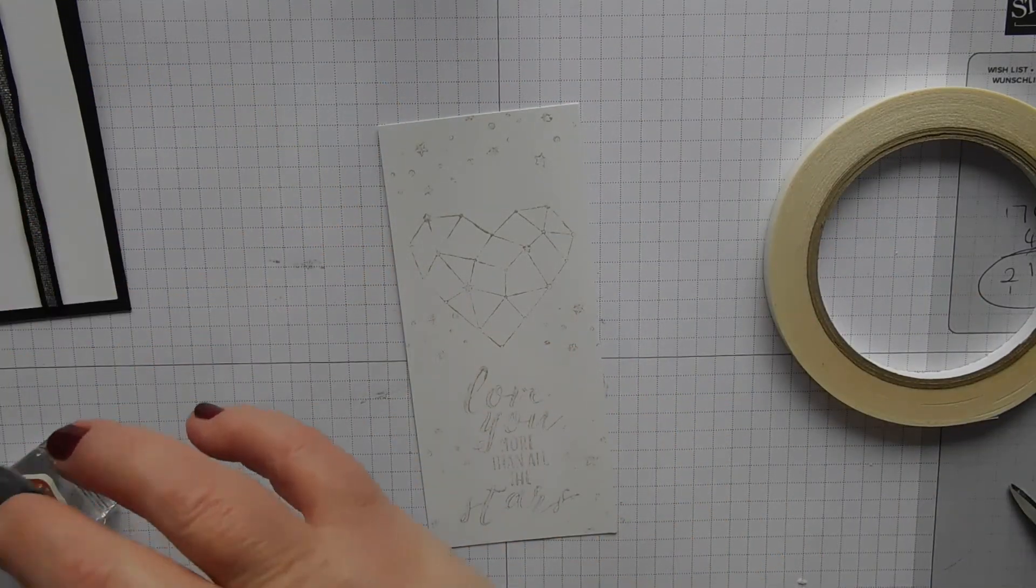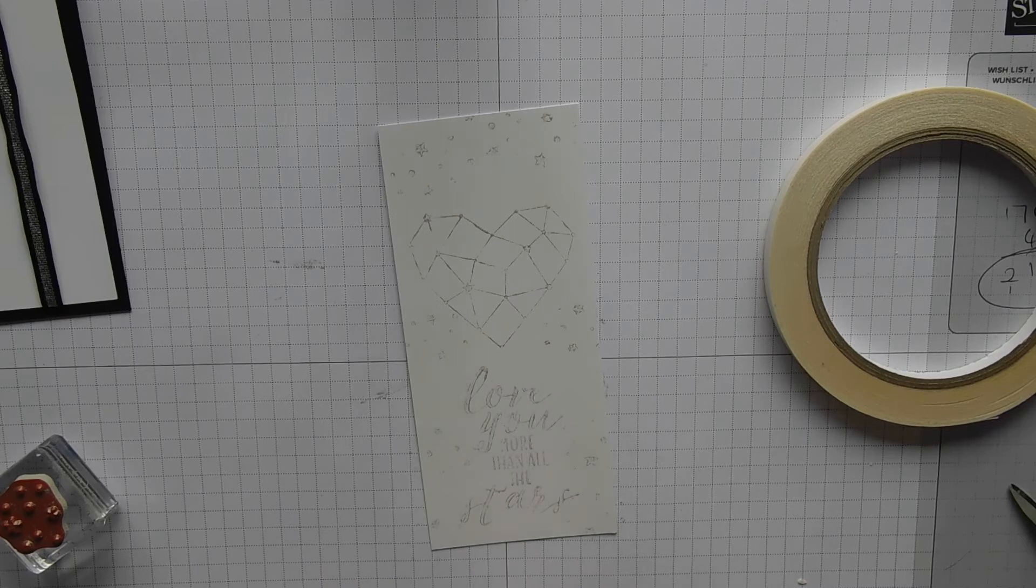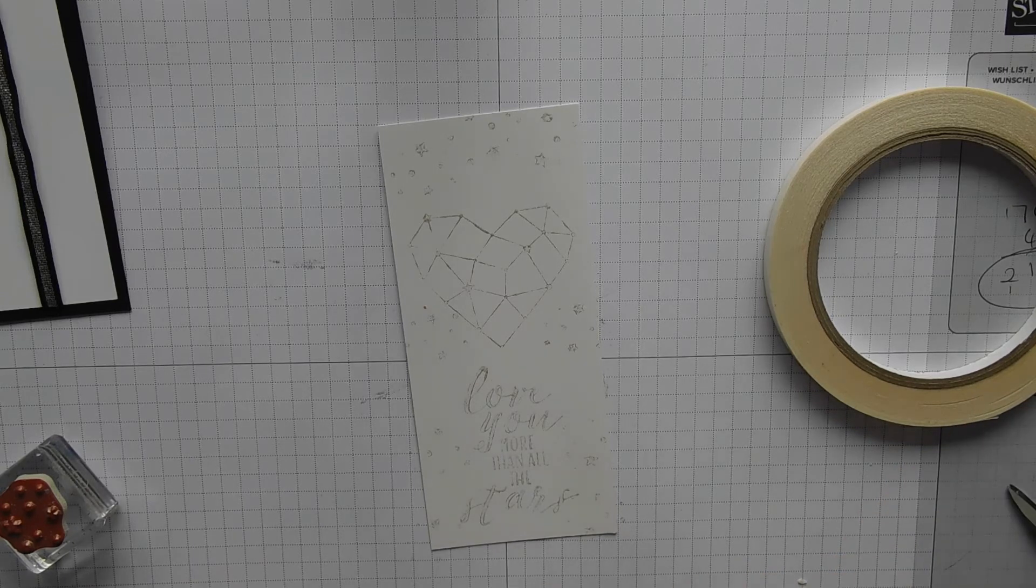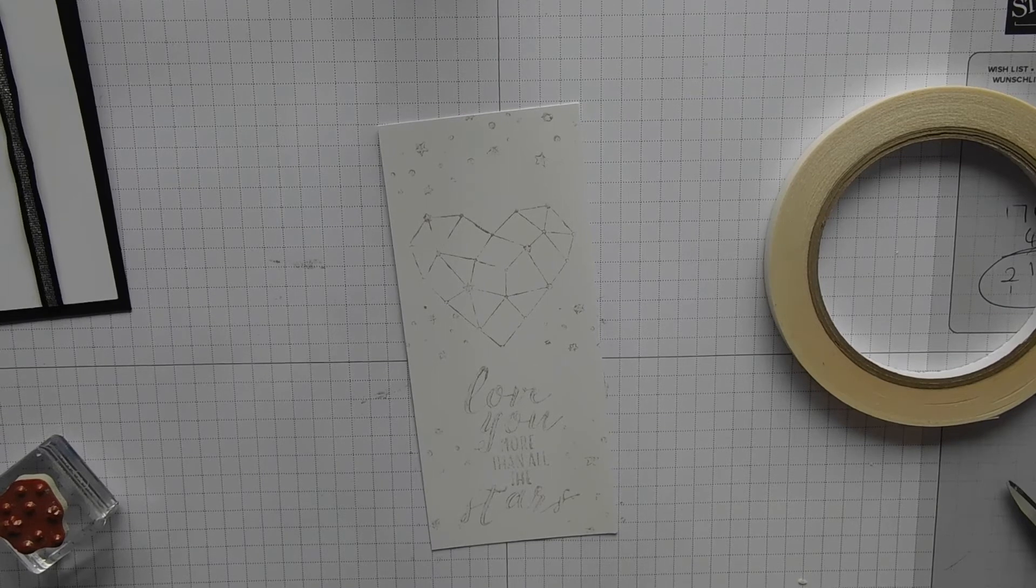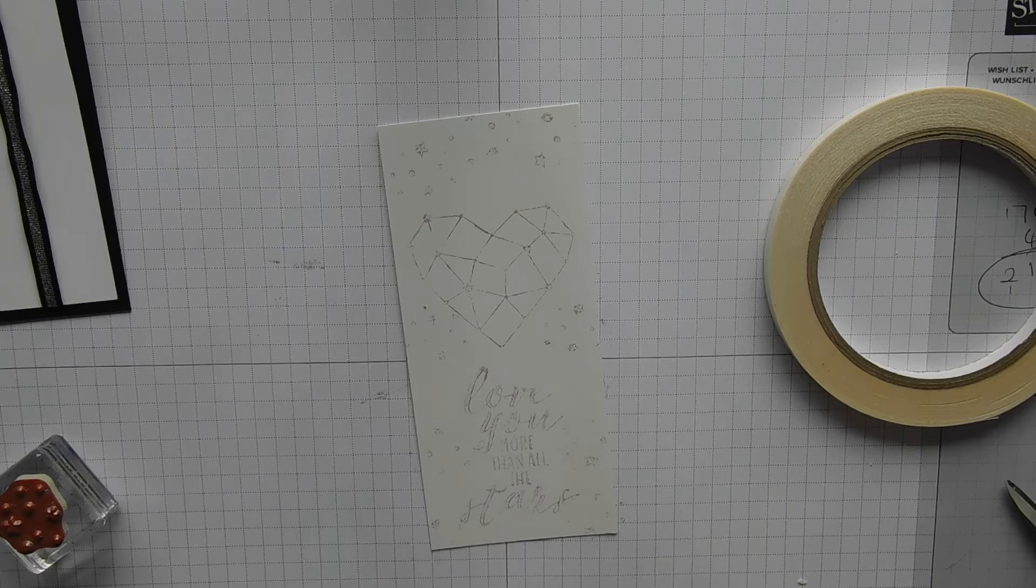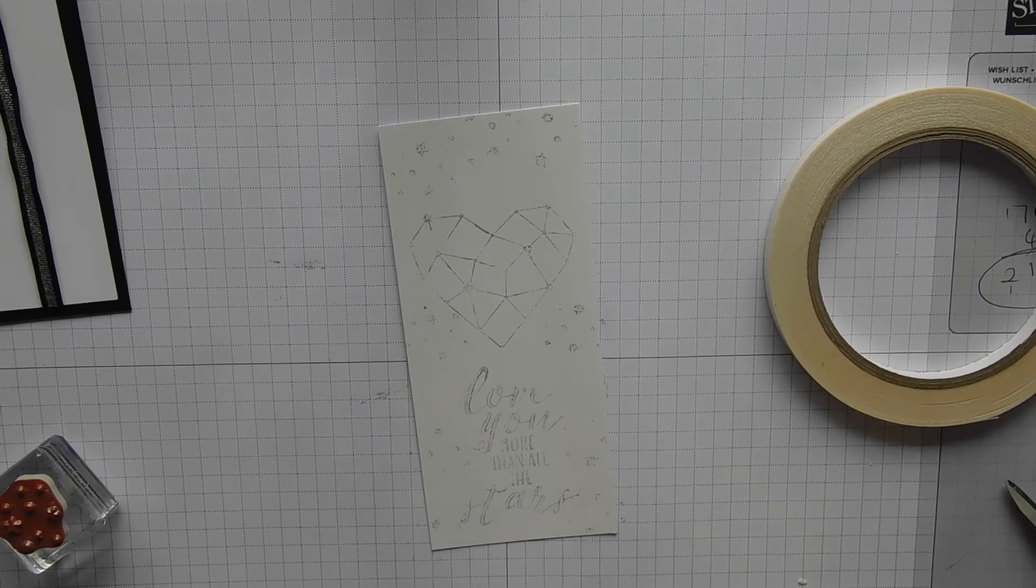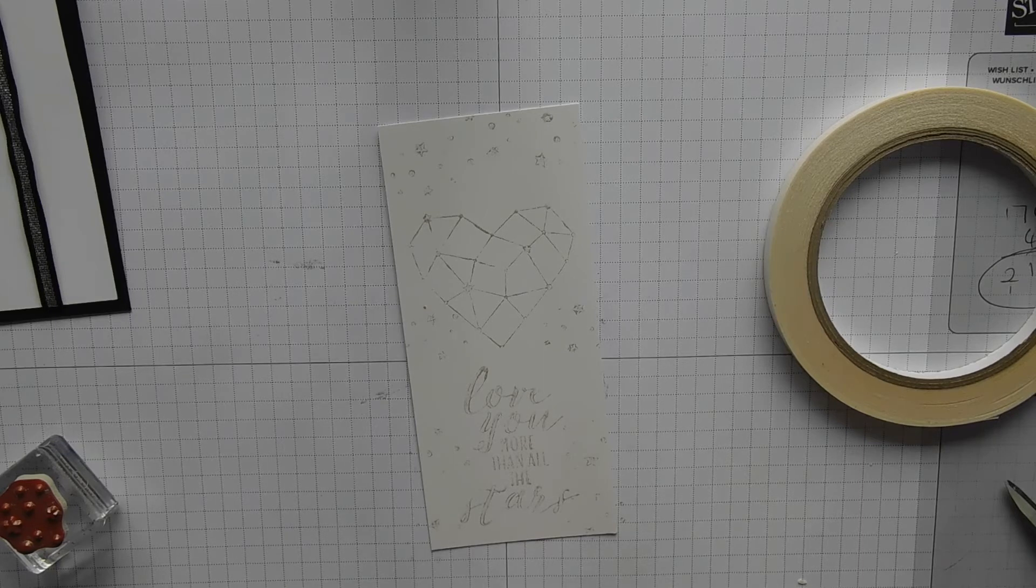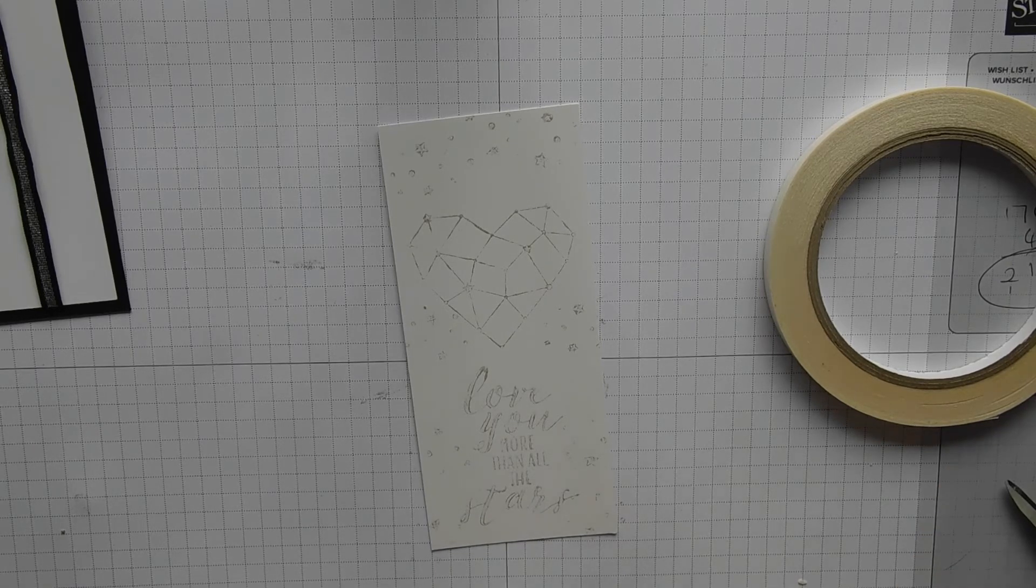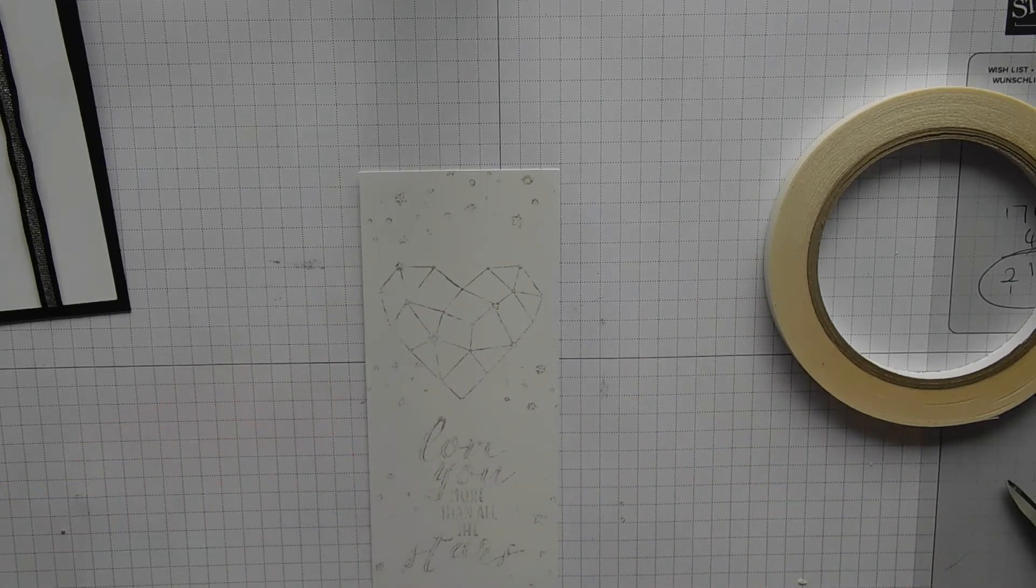I'm just going to leave that to dry just for a second. I'll just put the lid on that. And I'll just give my stamps a bit of a clean. Otherwise that shimmer will stick on. As I say, all the products and the measurements will be on my blog. So if you pop over to that, you'll be able to see exactly what the measurements are. Let's have a look. I think that's dry enough.